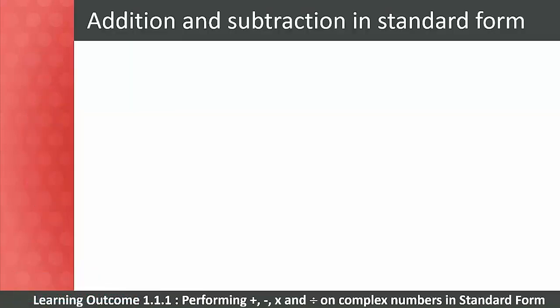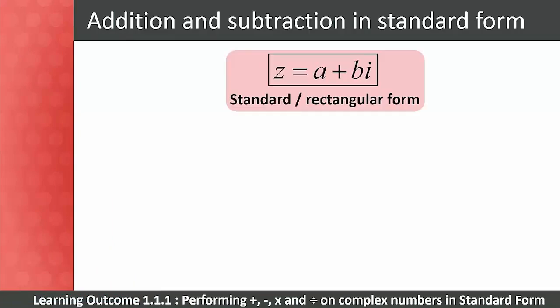Let's now revise addition and subtraction in standard form. Remember that the standard form of complex numbers is represented as z equals a plus bi. Your students should remember the procedures for addition and subtraction from Level 3.